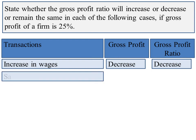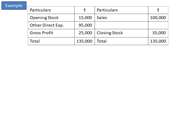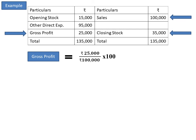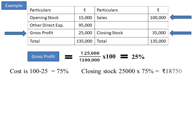Next transaction: sale of rupees 25,000 made. Here sales will increase but at the same time closing stock will get reduced by the same percentage. Let us see how with one example. In this trading account, sales are rupees 1 lakh, closing stock rupees 35,000, and gross profit is 25,000. That means gross profit ratio is 25,000 divided by 1 lakh into 100, that is 25 percent, and cost is 100 minus 25, that is 75 percent. Our transaction is sales increased by 25,000. Therefore, closing stock will decrease by 25,000 into 75 percent, that is by rupees 18,750.